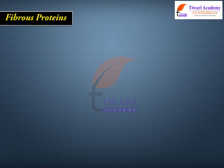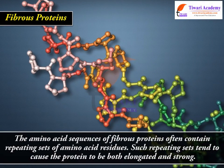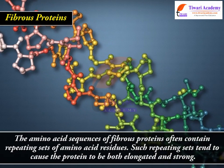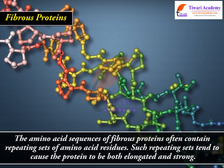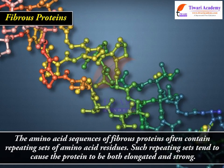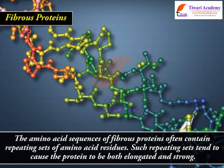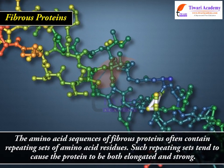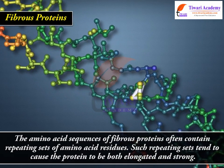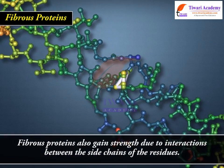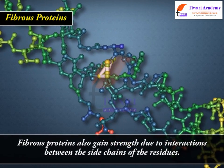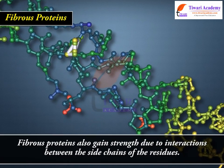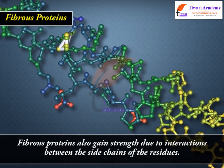Fibrous proteins. The amino acid sequences of fibrous proteins often contain repeating sets of amino acid residues. Such repeating sets tend to cause the protein to be both elongated and strong. Fibrous proteins also gain strength due to interactions between the side chains of the residues.